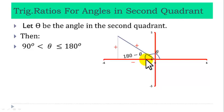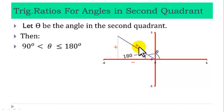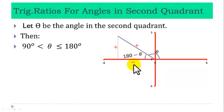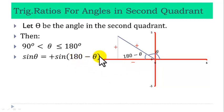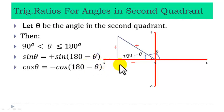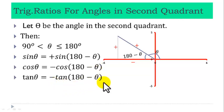Therefore, finding the trig ratio for an angle in the second quadrant is equivalent to finding the trig ratio for 180 minus theta. Sine is opposite over hypotenuse: plus over plus is plus. Cosine is adjacent over hypotenuse: minus over plus is minus. Tangent is opposite over adjacent: plus over minus is minus. So, sine theta equals plus sine of (180 minus theta). Cos theta equals minus cos of (180 minus theta). And tan theta equals minus tan of (180 minus theta). As we can see, it is only sine that is positive in the second quadrant, while cosine and tangent are negative.